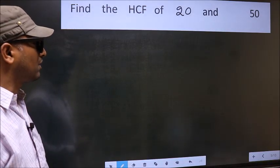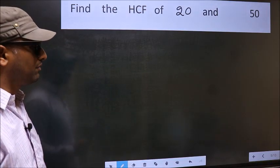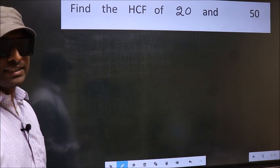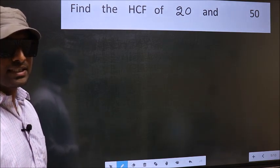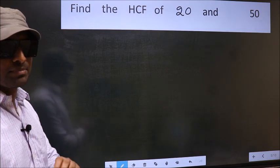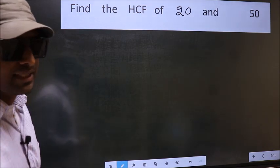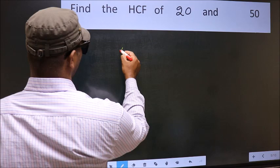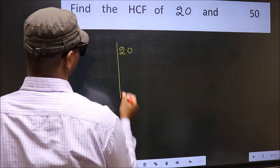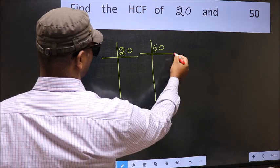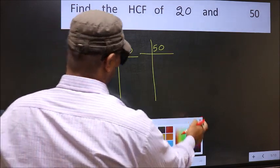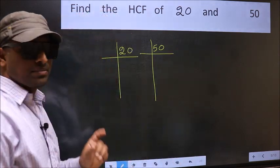Find the HCF of 20 and 50. To find the HCF, we should do the prime factorization of each number separately. What I mean is 20 and 50. This is your step 1.